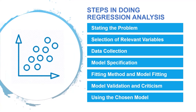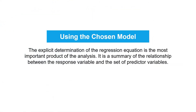The last step is to use the chosen model for the solution of the posed problem. The explicit determination of the regression equation is the most important product of the analysis. It is a summary of the relationship between the response variable and the set of predictor variables. The equation may be used for several purposes: to evaluate the importance of individual predictors, to analyze the effects of policy that involves changing values of the predictor variables, or to forecast values of the response variables for a given set of predictors.